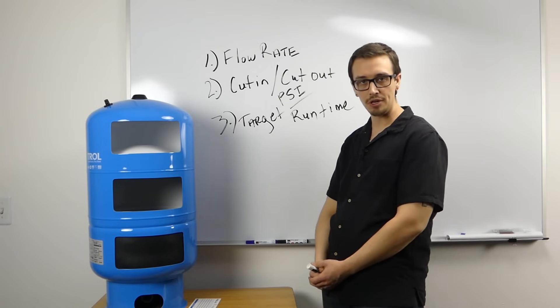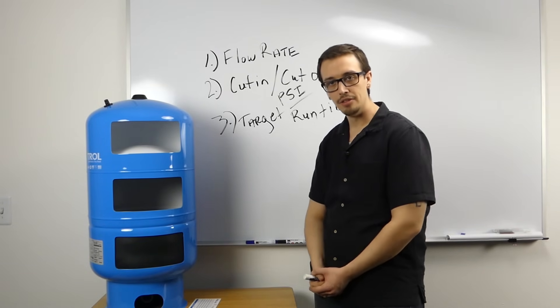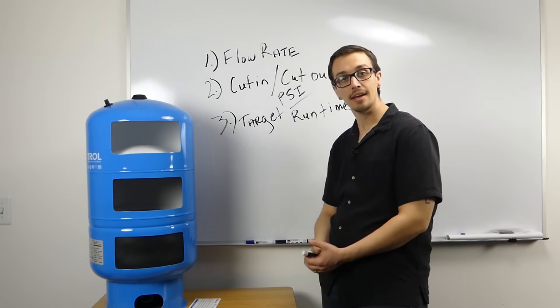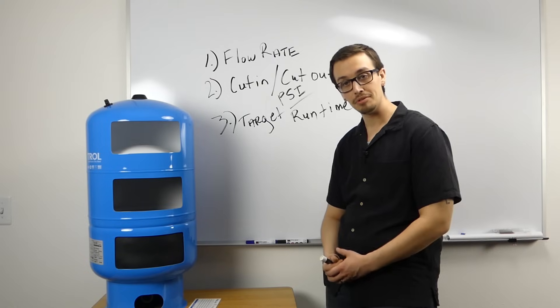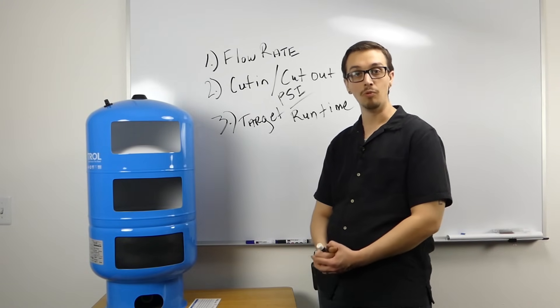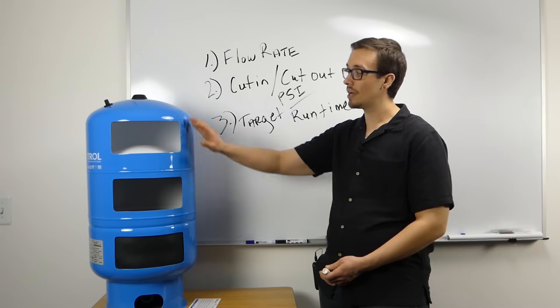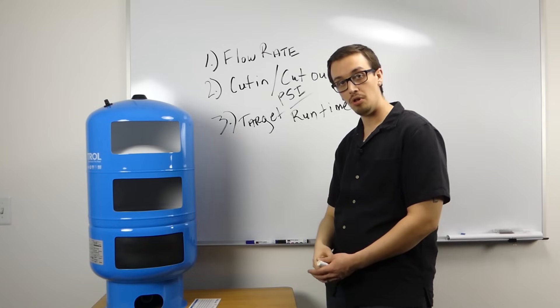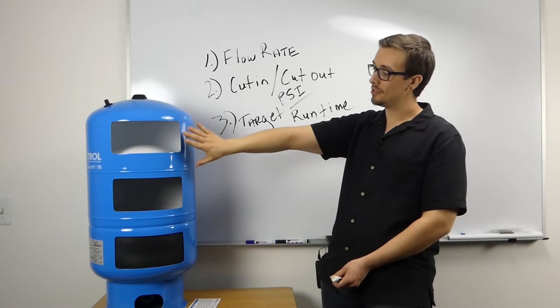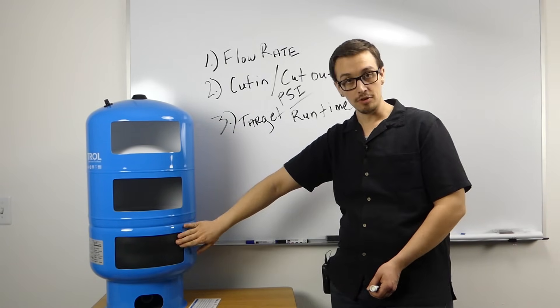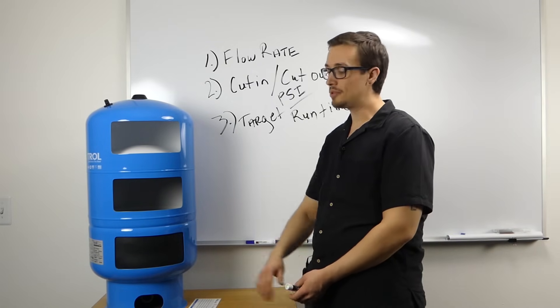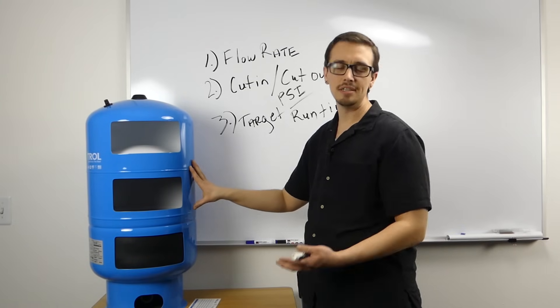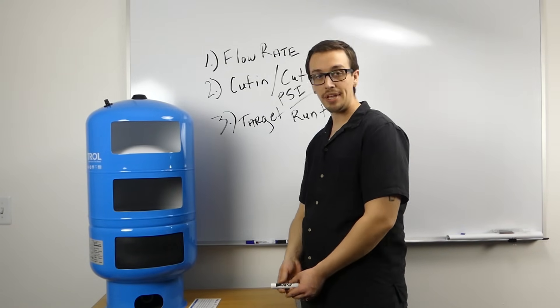One common misconception with pressure tanks is that the number of gallons of the tank is actually the drawdown capacity or the available volume of water in the tank. What I have here is a 20-gallon pressure tank, a Wellxtrol 202, and you can see that it's been cut out for display purposes. The volume of the tank does not necessarily match the drawdown capacity of the tank.